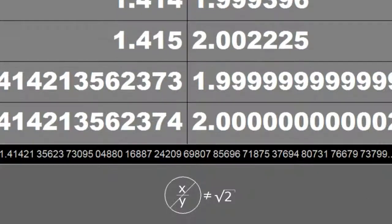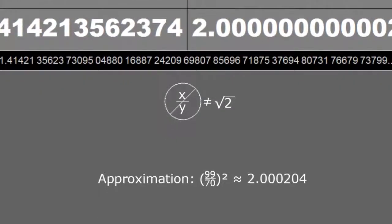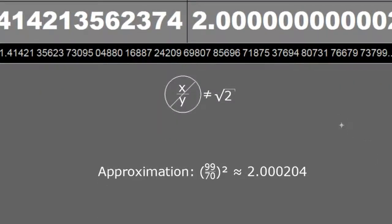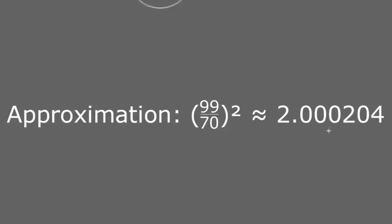Since all irrational numbers have this characteristic, we can see that the square root of 2 is an irrational number. Some people approximate it by saying the square root of 2 is 99 over 70. If you square 99 over 70, you get 2.000204. If you are working with a precision of 3 decimal places and that is acceptable, you can use this as an approximation.